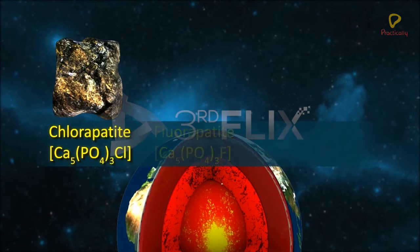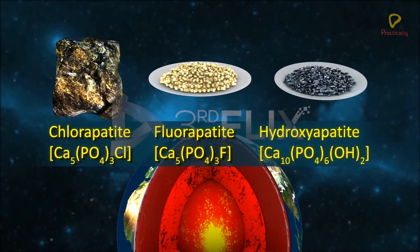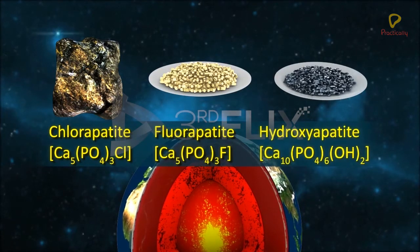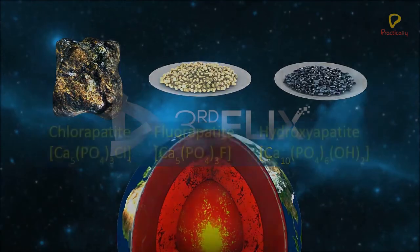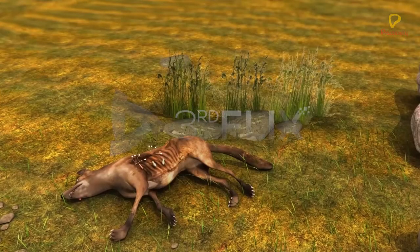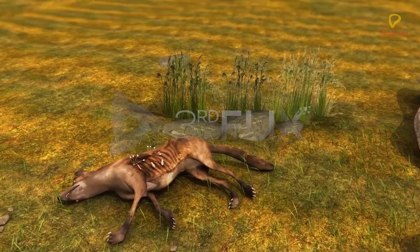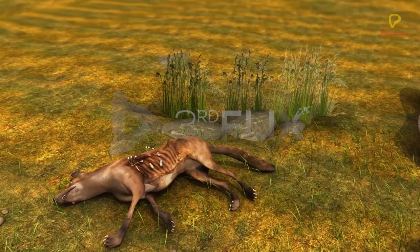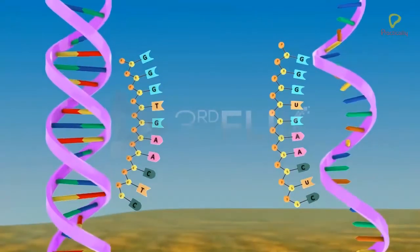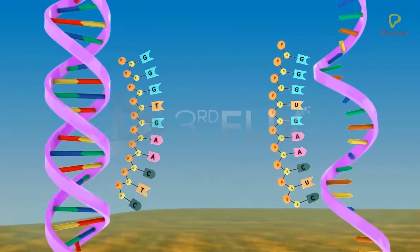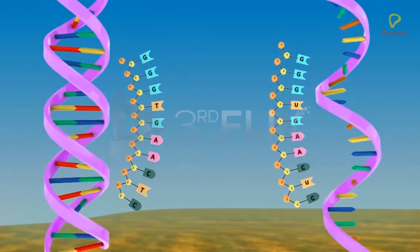Chlorapatite, Fluorapatite and Hydroxyapatite are some examples of phosphates. These comprise the apatite family. Phosphorus is an essential constituent of plant and animal matter. Phosphate groups are among the important constituents of nucleic acids.